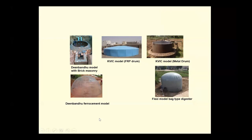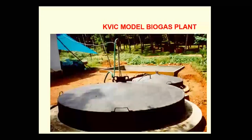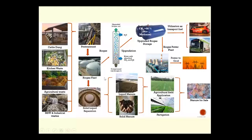The Ministry has approved different types of biogas plants. The two most popular models in India are the KVIC model — the Khadi Village Industries Commission model — and the Deenbandhu model biogas plant. Other models are now outdated. Night-soil-based biogas plants are also available. The feedstock is pre-treated to remove soil, stones, or impurities before being sent to the biogas plant where gas is generated.